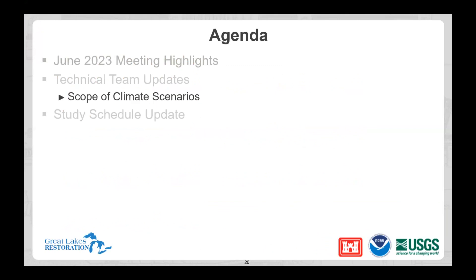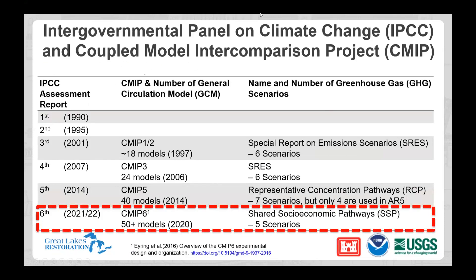Now we're going to transition to a discussion of the scope of our climate scenarios — this will be new material we haven't covered before. We are going to use CMIP6 models specifically for our project. The purpose of CMIP6 is to provide climate scientists with a database of coupled simulations under standardized boundary conditions. These model outputs can be used to assess climate warming's impact on atmospheric and hydrological processes.